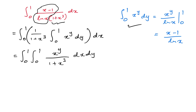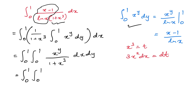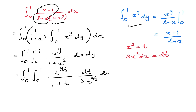Now I'm going to take the substitution x cubed equals t. Differentiating gives 3x² dx = dt. Substituting in, the limits remain 0 to 1, and x to the y becomes t to the y/3, while 1 plus x cubed becomes 1 plus t, and dx becomes dt over (3 times x squared), where x squared equals t to the 2/3.